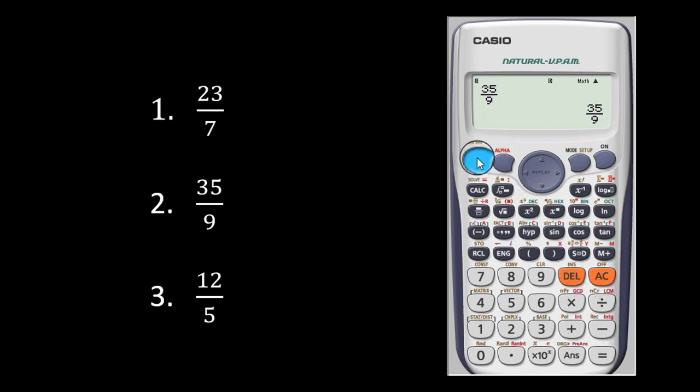Then again, I press the shift key and of course this fraction toggle key down here. Now you see that it appears. Three whole number, 8 over 9.